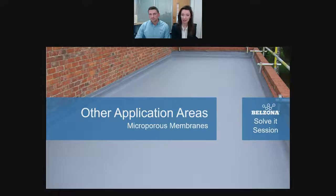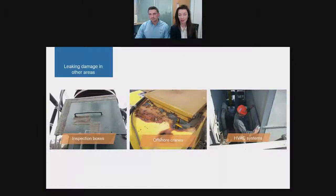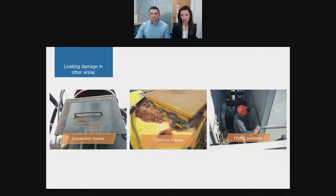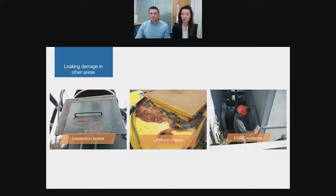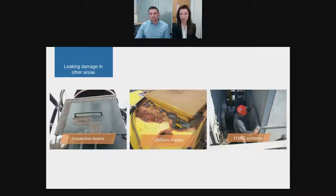It's not just roofs where you can use membranes to repair and protect. On screen are some other areas where they've been used. Starting from the left — electrical inspection boxes which have been incorrectly sealed can cause costly damage to electricity and gas utility companies due to water ingress into electric components through failed seals. This offshore crane shows how the harsh environment of the offshore industry can cause leaks with the potential for electrical damage, putting cranes out of action for weeks. HVAC systems are often left undermaintained; the joints and seams of air conditioning ducting can become loose and damaged over time, particularly at elbows and tee pieces.